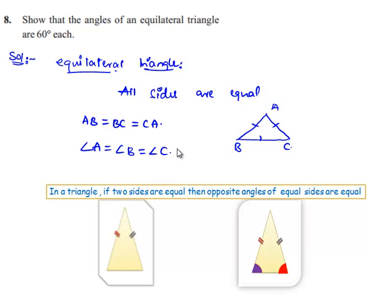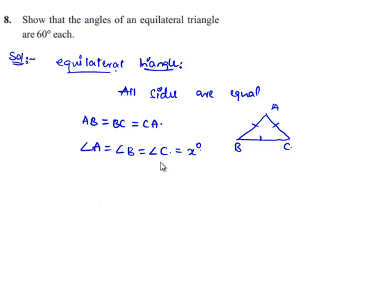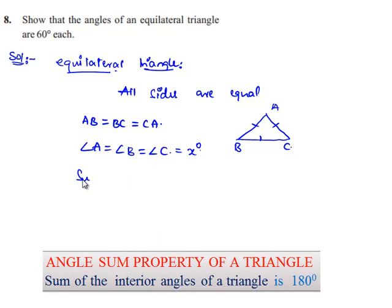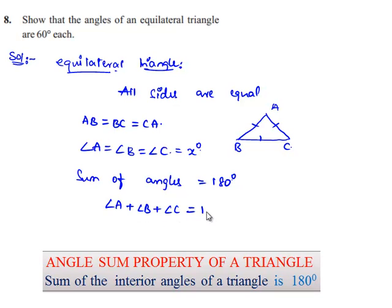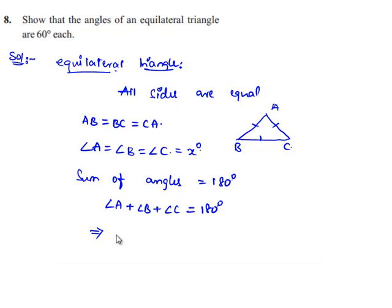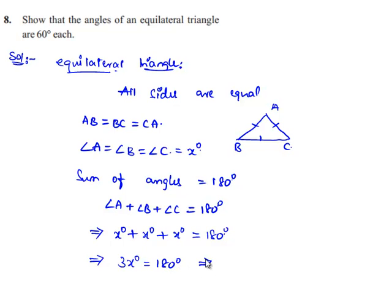Let us assume that all three angles are equal to X degrees. We know that the sum of angles in any triangle is equal to 180 degrees. So angle A plus angle B plus angle C equals 180 degrees, which gives X plus X plus X equals 180 degrees, which implies 3X equals 180 degrees, so X equals 60 degrees.